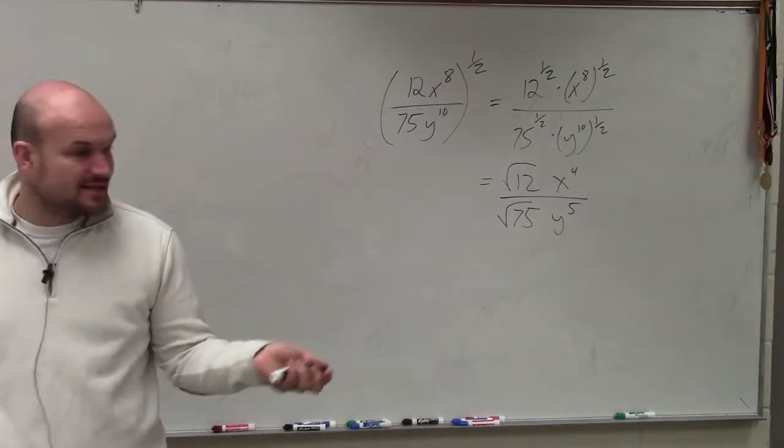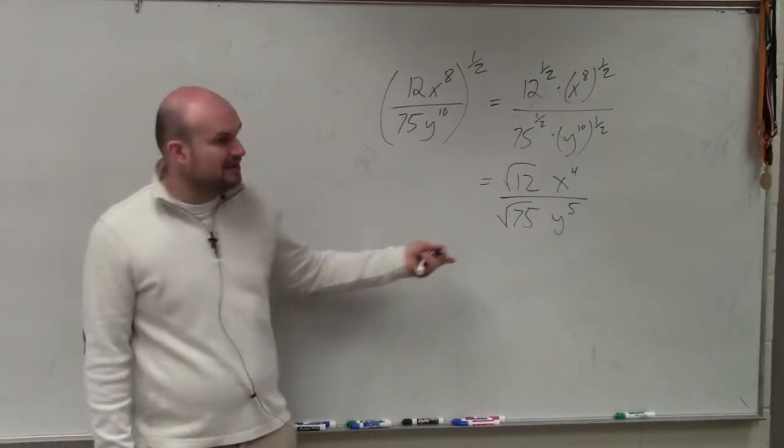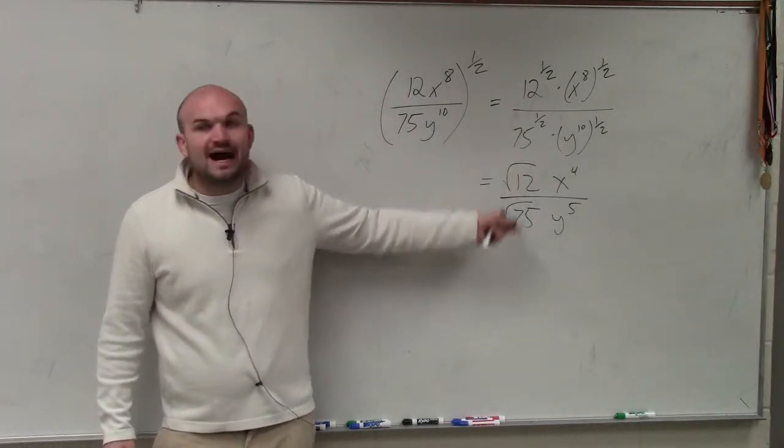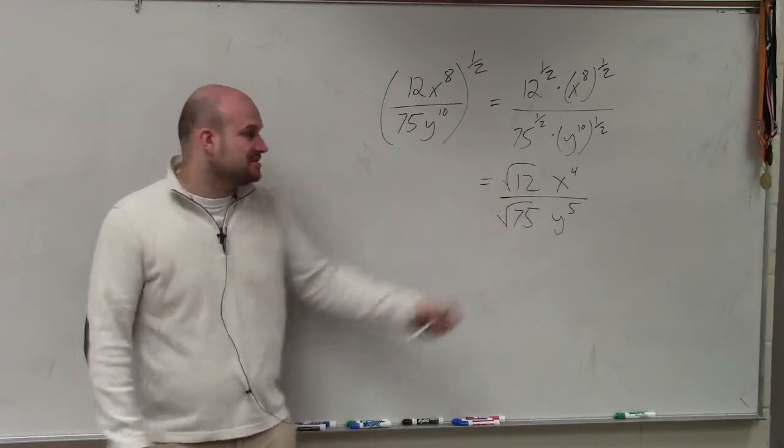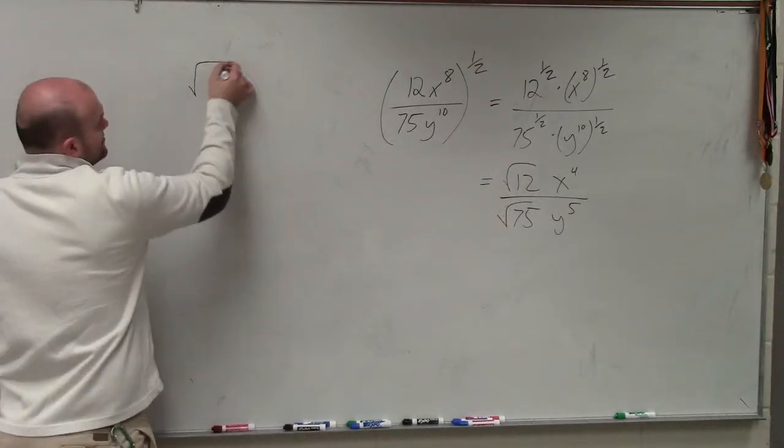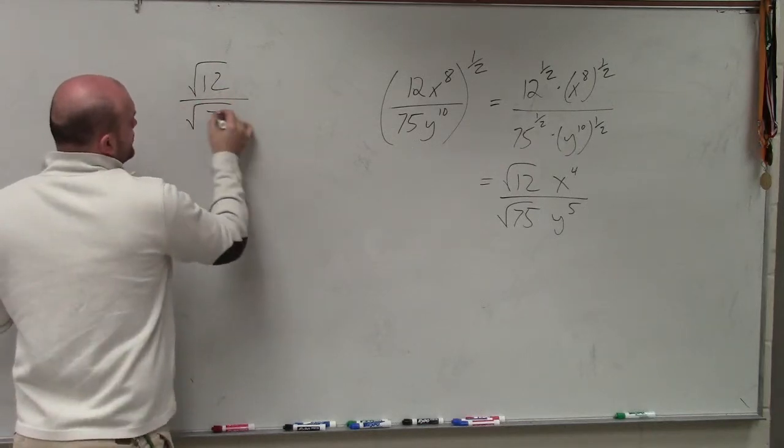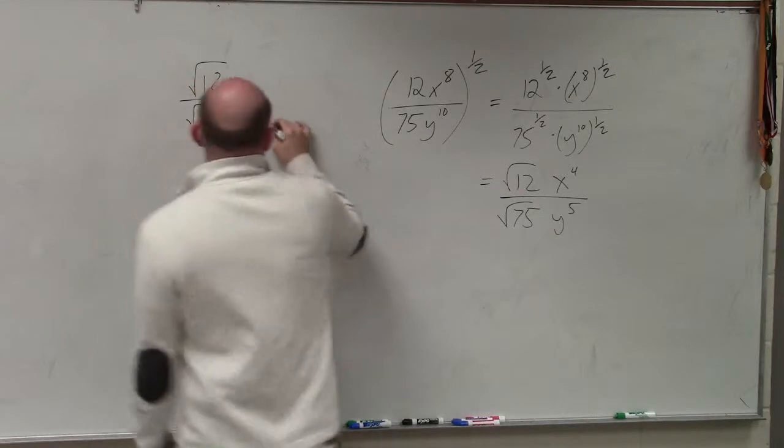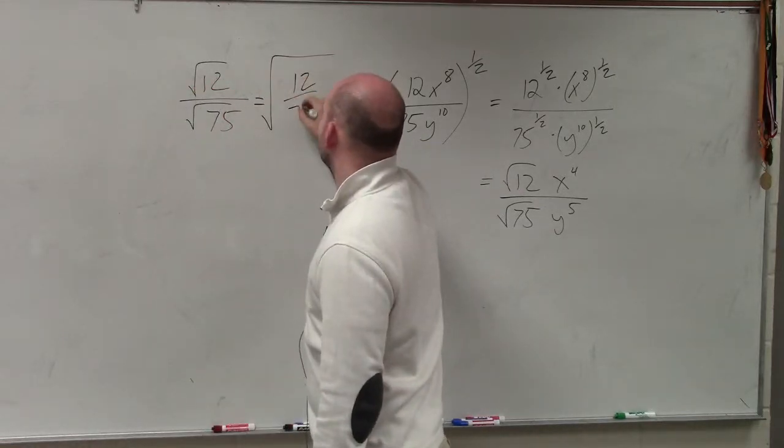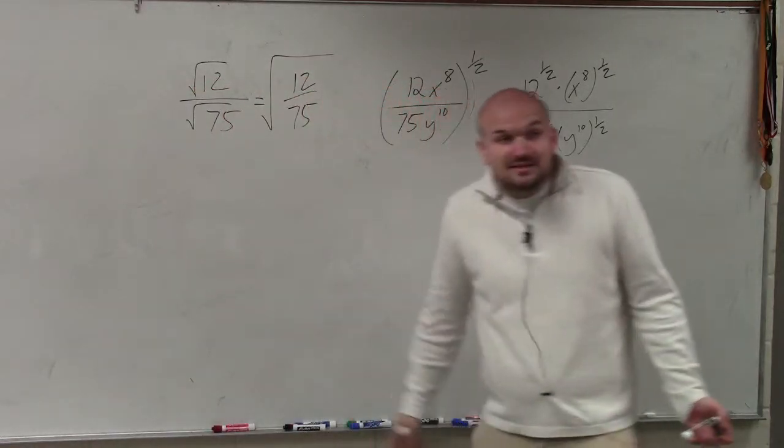Now, lastly, the last thing we want to do is be able to see if we can divide out our fractions. Now obviously you could simplify both these fractions, but remember what we talked about last class period. If you have square root of 12 over the square root of 75, that's equal to the square root of 12 over 75.